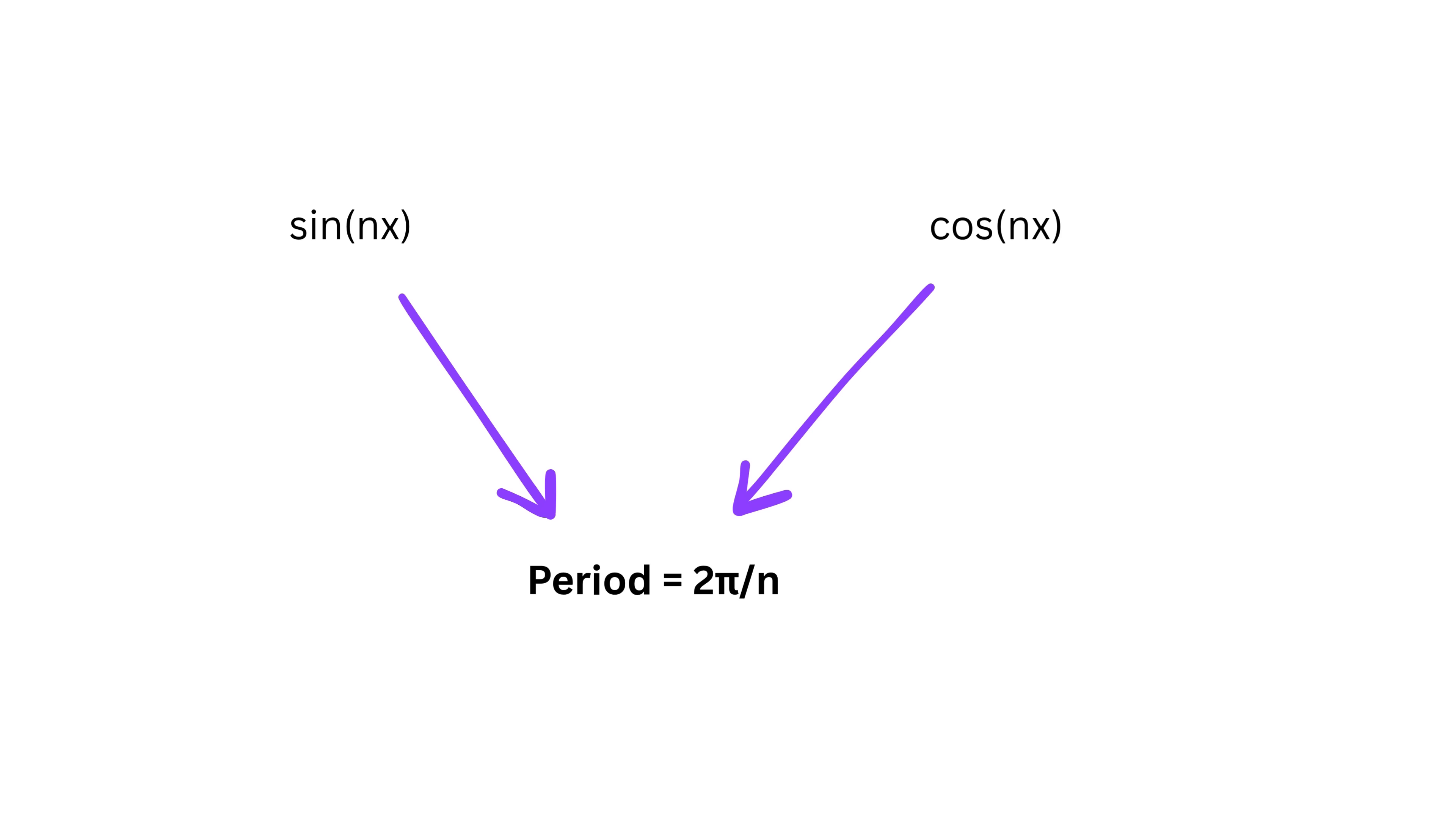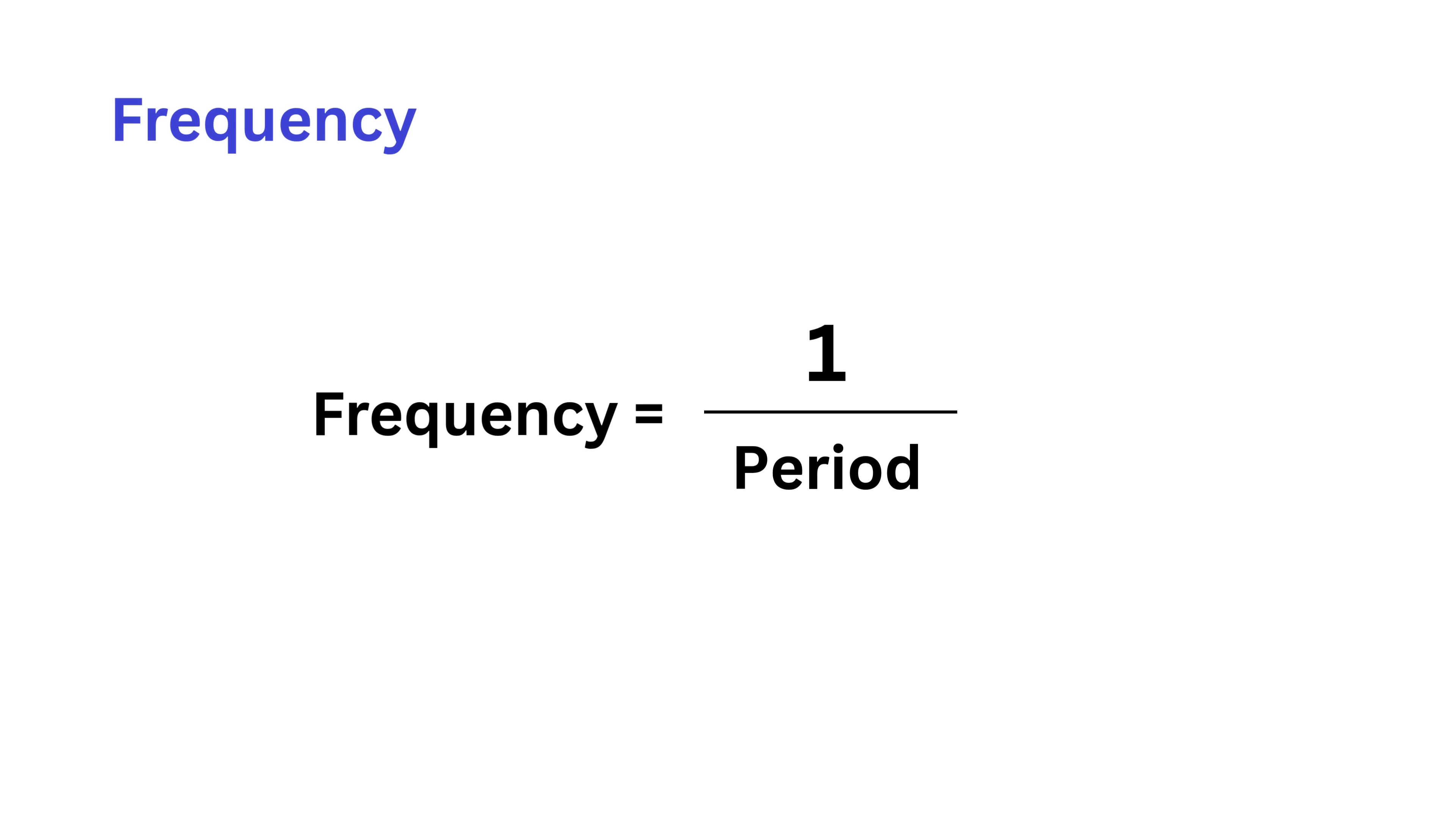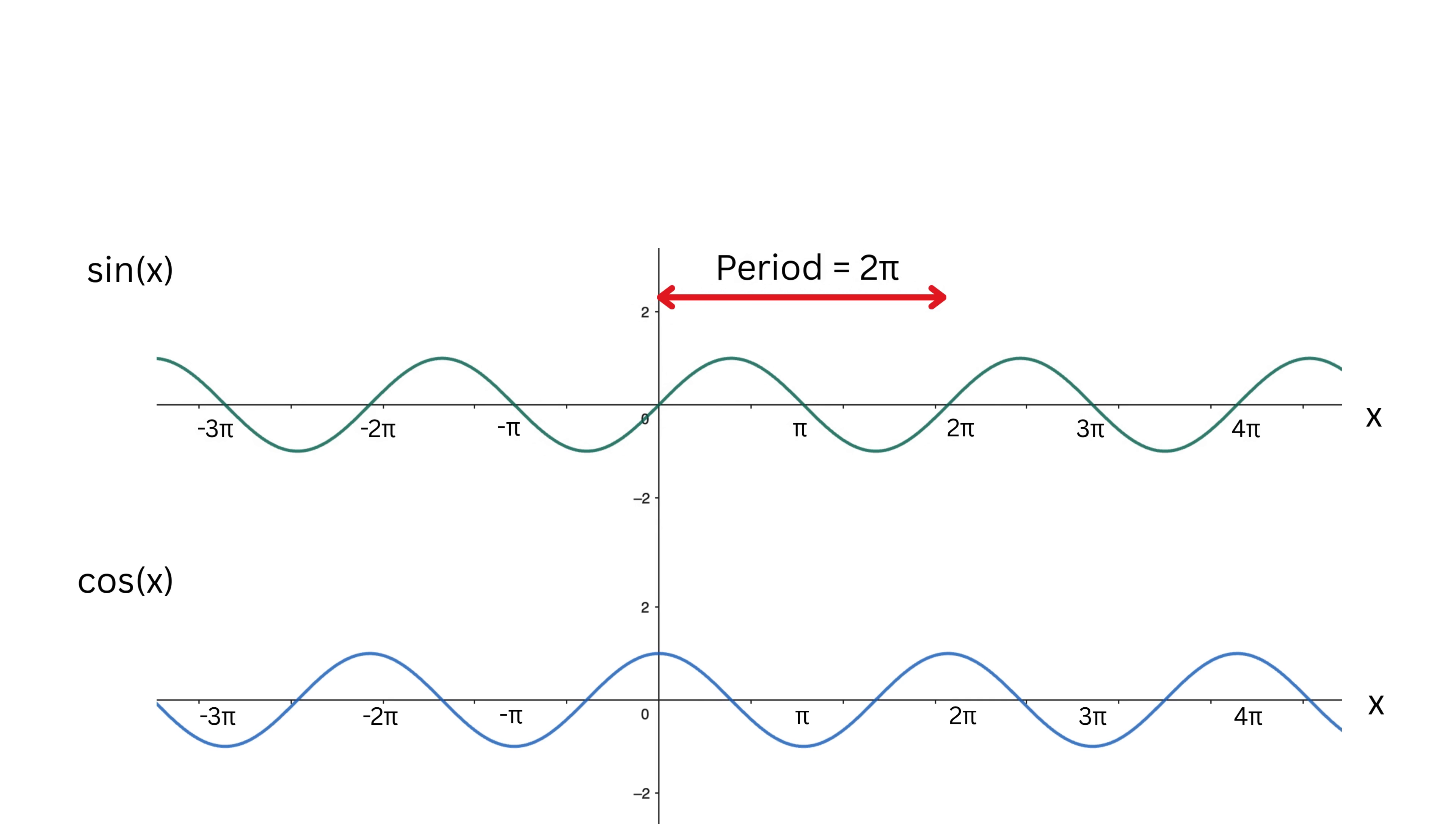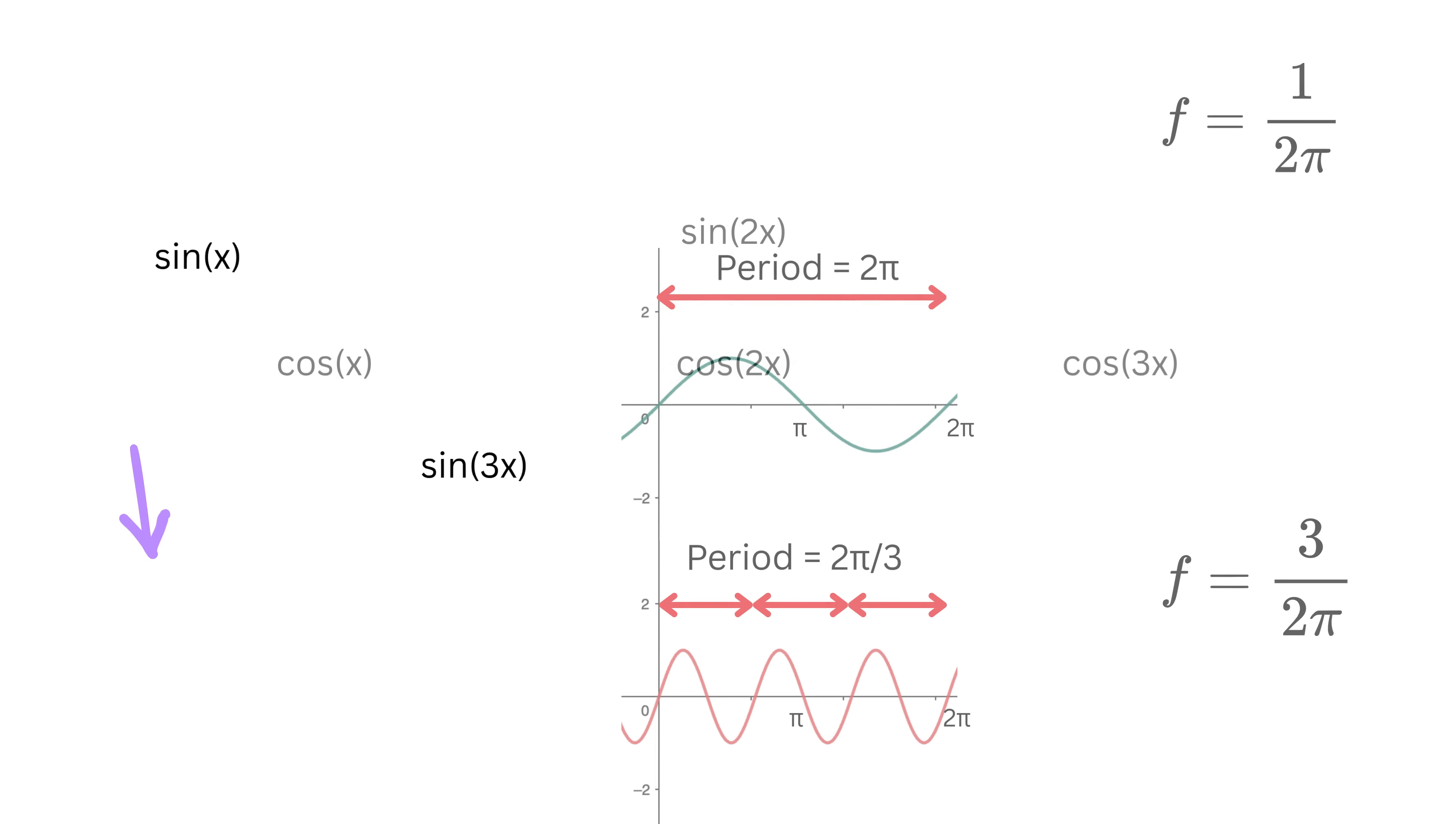Now that we understand period, let us connect it to another very important idea called frequency. Frequency is simply the opposite of period or 1 over period. So, from the examples we just saw, sin(x) and cos(x) repeat after 2π, which means their frequency is one cycle in 2π distance. In the same way, sin(3x) and cos(3x) repeat after a period of 2π divided by 3, which means inside the distance of 2π, they complete three full cycles. So, their frequency is three cycles in 2π. This means this 3 here, before x, shows that the frequency of the wave is three times the frequency of sin(x).